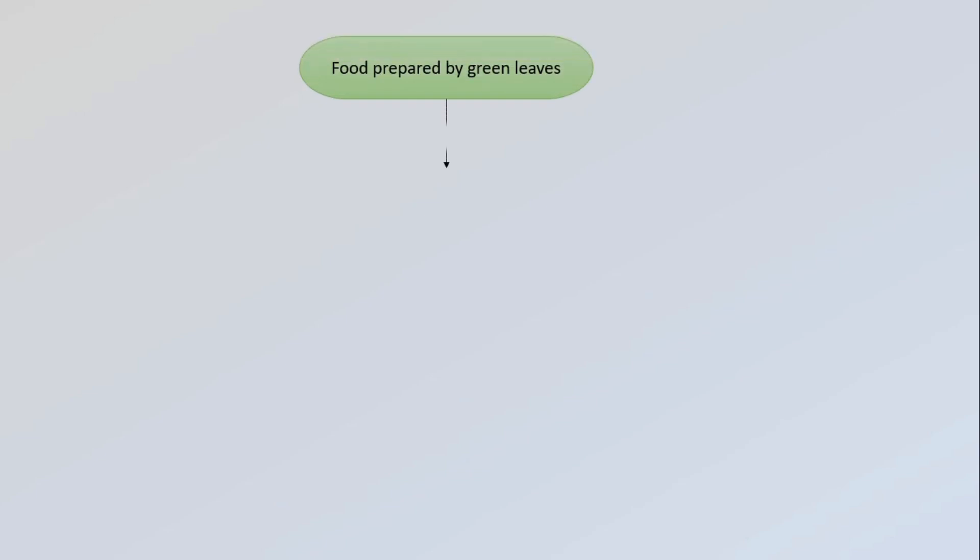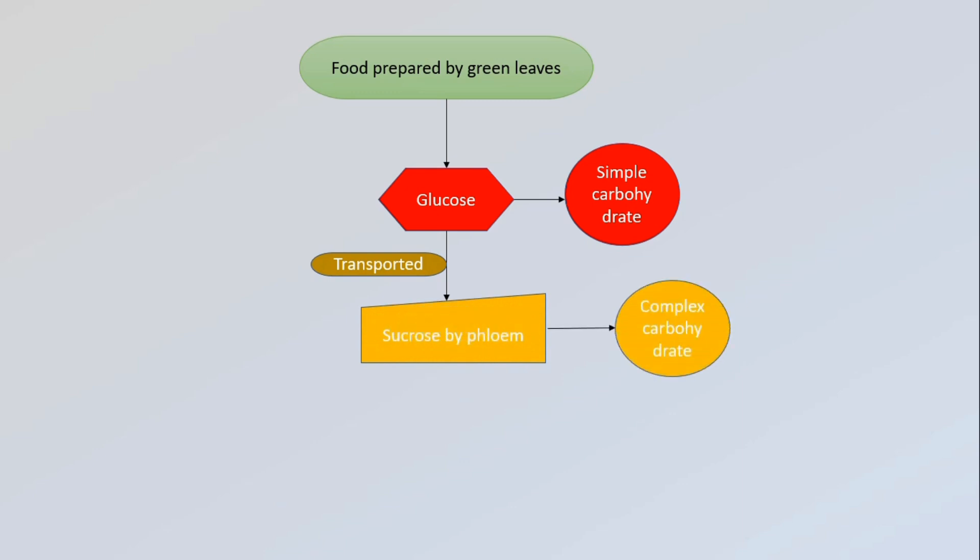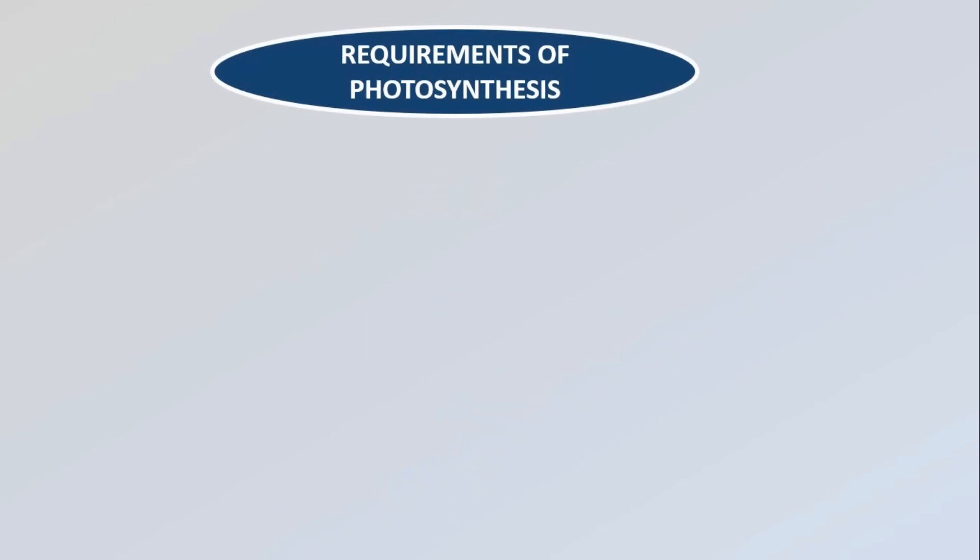The food prepared by green leaves is in the form of a simple carbohydrate called glucose. This glucose is synthesized in the leaves and then transported to different parts of the plant as sucrose by the phloem. The extra glucose is changed into complex carbohydrate called starch, which is stored in the leaves and other parts of the plant. There are a few materials required by the plants for photosynthesis.